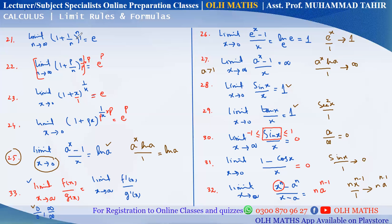For limit x→a of (x^n − a^n)/(x − a): x = a gives 0/0. Derivative of x^n is n·x^(n−1), derivative of (x − a) is 1. Put x = a: n·a^(n−1). This gives the shortest proof. Now for Formula 21: as x→∞, 1/∞ = 0, so (1 + 0) = 1 raised to power infinity — indeterminate form.